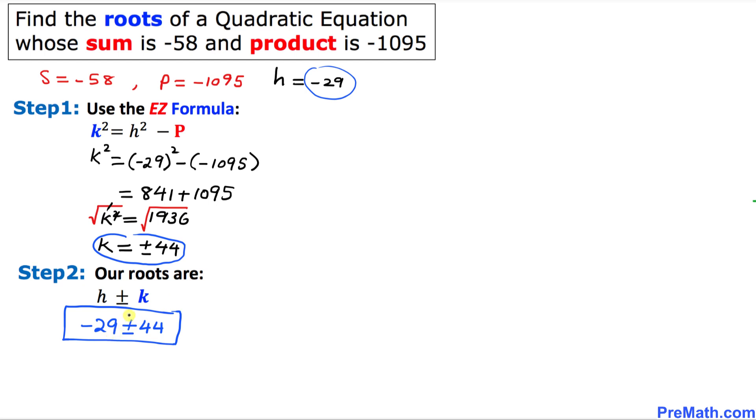So what that really means is we are going to split these two numbers along these signs. So the first one is going to be negative 29 plus 44, and the other one is going to be negative 29 minus 44. One with a positive sign and one with a negative sign. So this is going to give us positive 15.